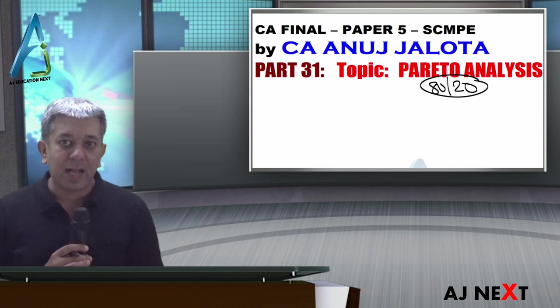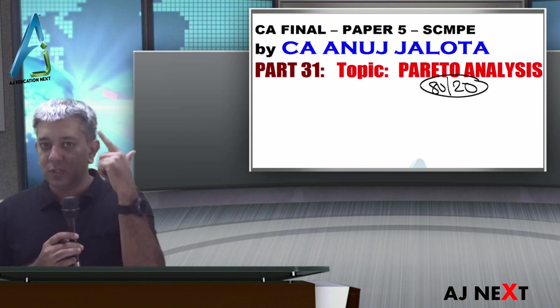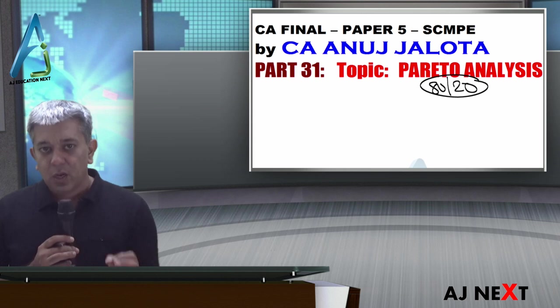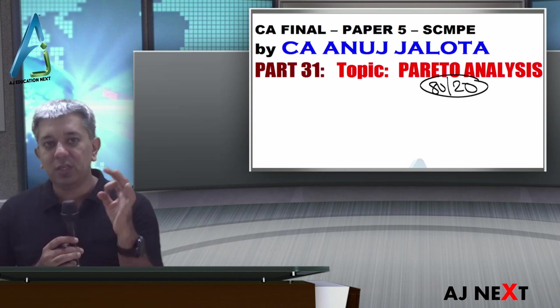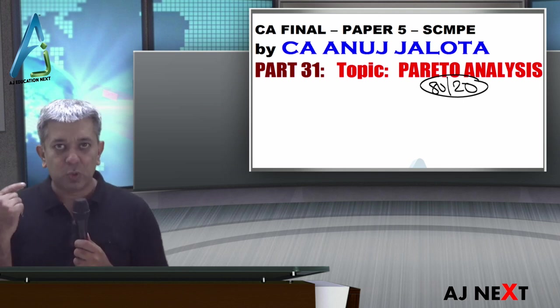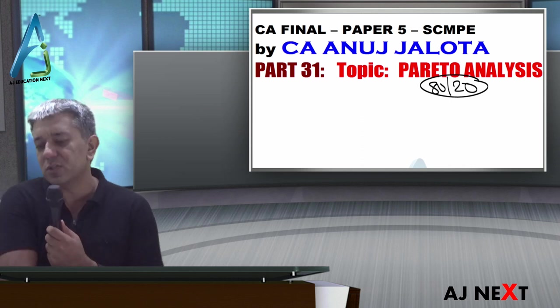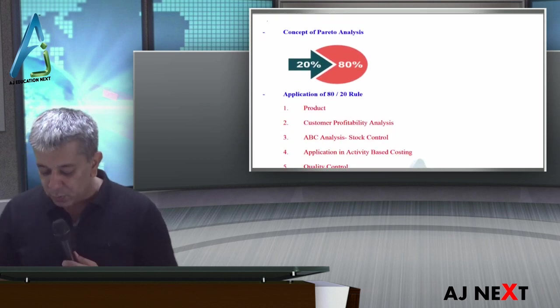So basically the concept came from Mr. Alfred Pareto, who made this entire theory. What did he say? His vision started like this - one day he realized 80% of world's wealth is only there with 20% of the people. He started researching this concept and found it's true in most cases also. So he called this analysis the 80-20 rule.